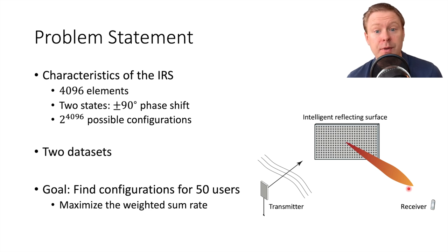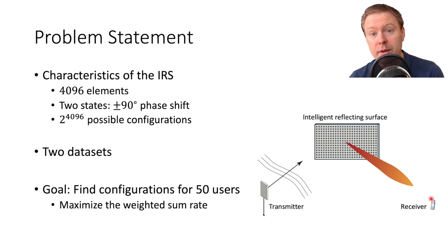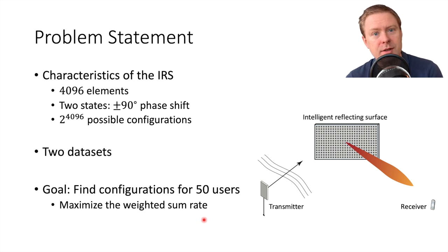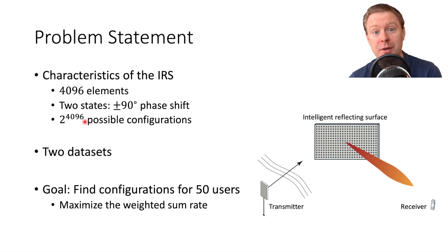While a typical metal surface would have the same configuration everywhere, with an intelligent reflecting surface we can tune how a signal is reflected. The goal is to find good configurations for 50 different users located in roughly the same location, one configuration tuned per user, maximizing the weighted sum rate. One big challenge is that we cannot test all possible solutions — with only two states per element there are 2 to the power of 4096 possible configurations, which is more than the number of atoms in the known universe. So we need to design a smart algorithm.